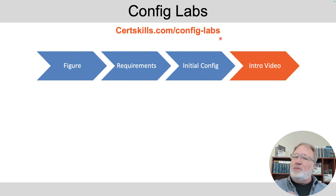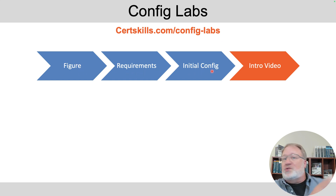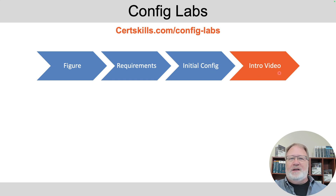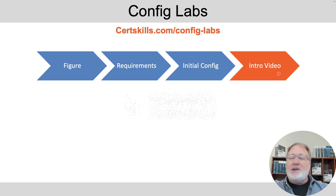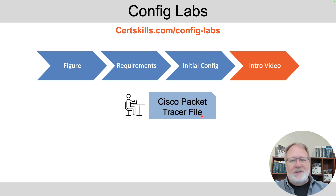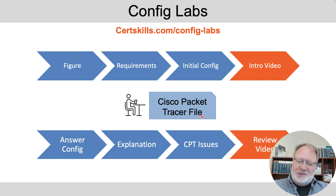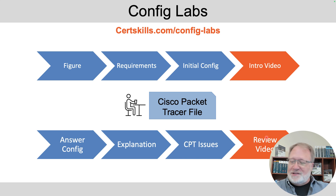Each config lab on the blog post has a figure, requirements, and initial config that you can just read — you don't even need the videos. For this lab there's also an intro video, and there'll be more and more of those over time. But you really do need to do the lab: download the Cisco Packet Tracer file, use Cisco Packet Tracer, attempt the lab, and then look at the blog page for the answer, explanation, and any known Packet Tracer issues. This video is the review video for this particular lab.